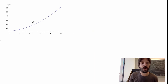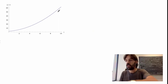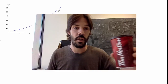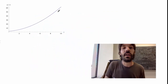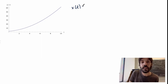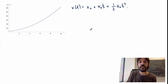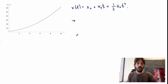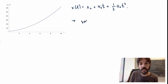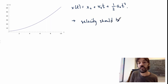Let's look at a more complicated example where the position is described by a nice-looking curve. Physically, my object is moving faster and faster. Mathematically I write x of t equal to x0 plus v0*t plus one-half a0 times t squared, where x0, v0, and a0 are all constants. If I ask you what the velocity should be, it's not so obvious. We know that the velocity should be increasing since the object is accelerating, but the exact equation for the velocity is not easy to deduce just from thinking about the physics.